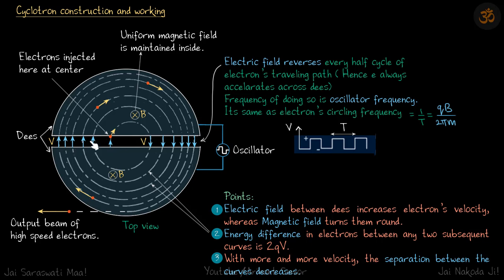By the time the electron comes from here to here, the direction of the field needs to be reversed. That's why there is an oscillator here that varies the voltage periodically. These halves are called dees.